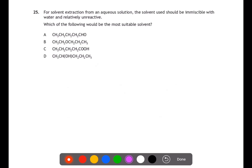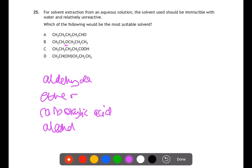Question 25. For solvent extraction from an aqueous solution, the solvent used should be immiscible with water and relatively unreactive. Which of the following would be the most suitable solvent? The first solvent that we have is an aldehyde, which could be quite soluble in water and might be reactive. The second solvent that we have is an ether, which is usually not very soluble in water and is also very unreactive. Our next solvent is a carboxylic acid. Again, could be soluble in water and is reactive. And then finally, an alcohol, which could also be soluble in water. So your best choice would be an ether.